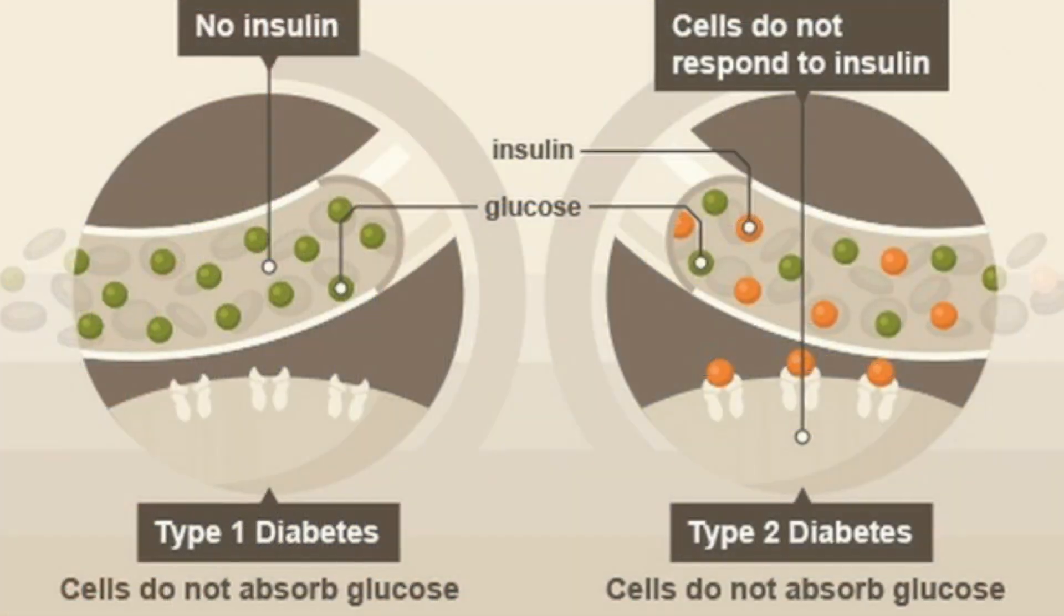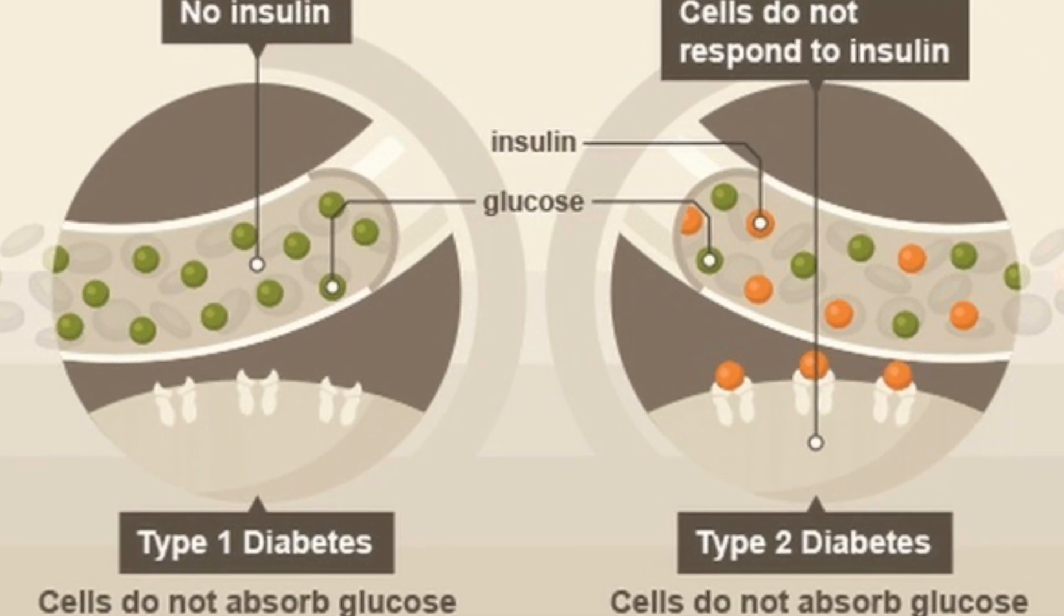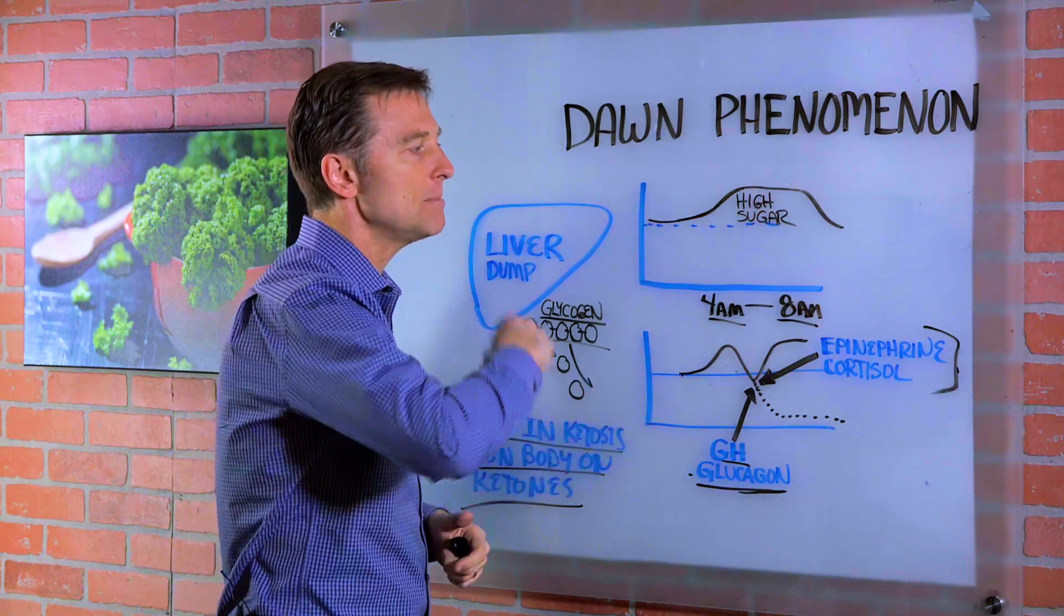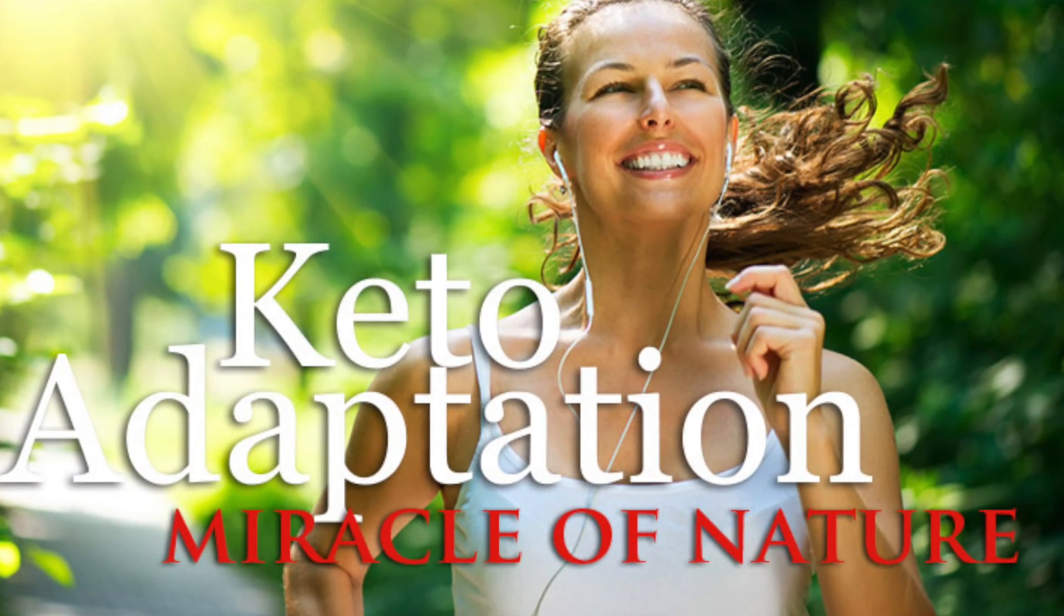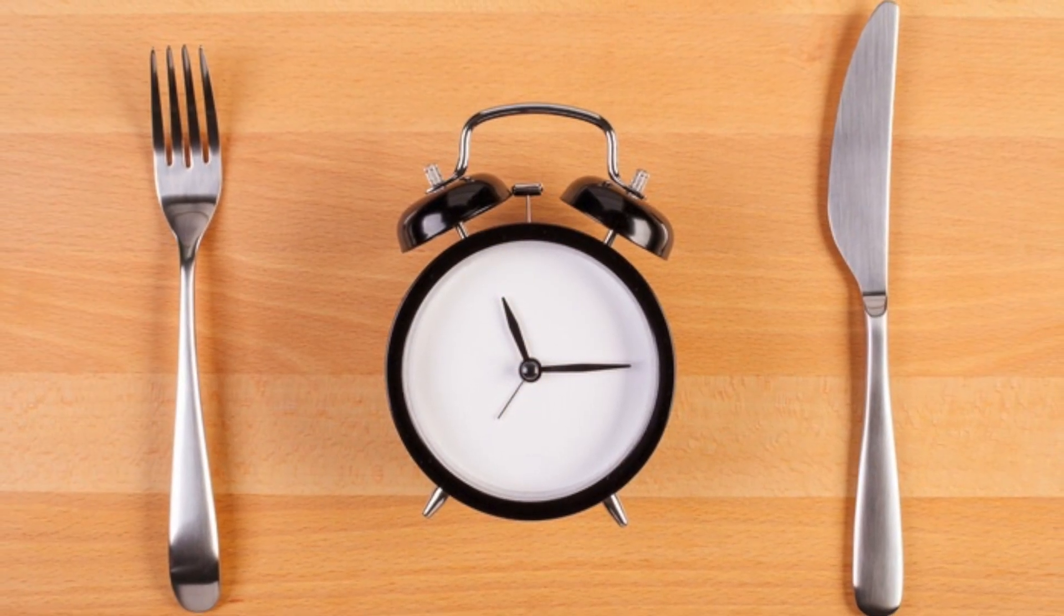Now, if you're a diabetic type one or type two, I still suggest you do keto and intermittent fasting because those two powerful tools can help minimize this effect right here. And I know diabetics who do ketosis and intermittent fasting, and this thing clears up.